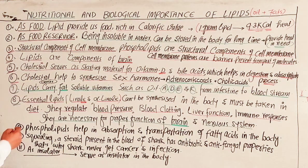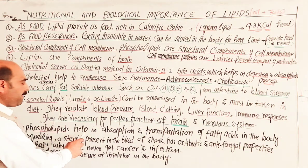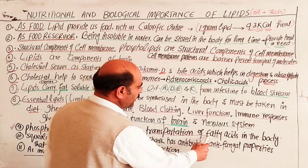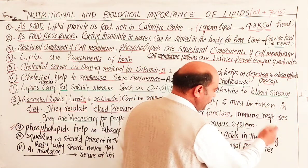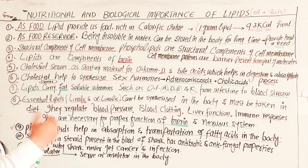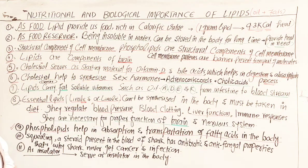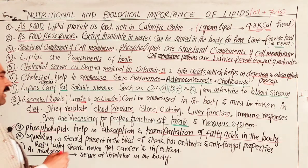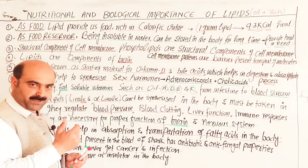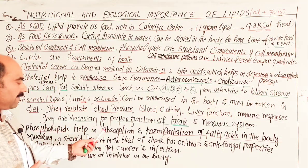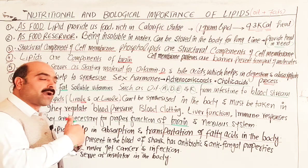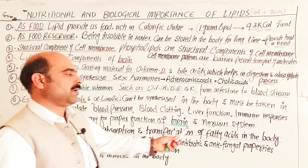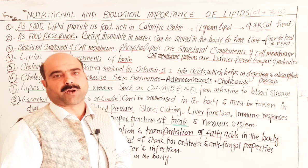Point nine: phospholipids, which are a type of compound/complex lipid, help in the absorption and transportation of fatty acids in the body. They assist in absorbing essential fatty acids and transporting them to various parts of the body.